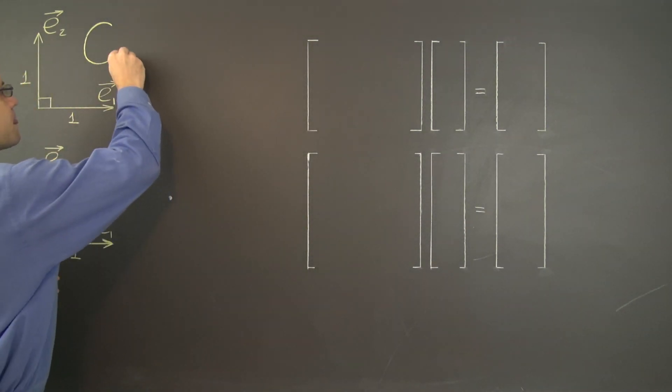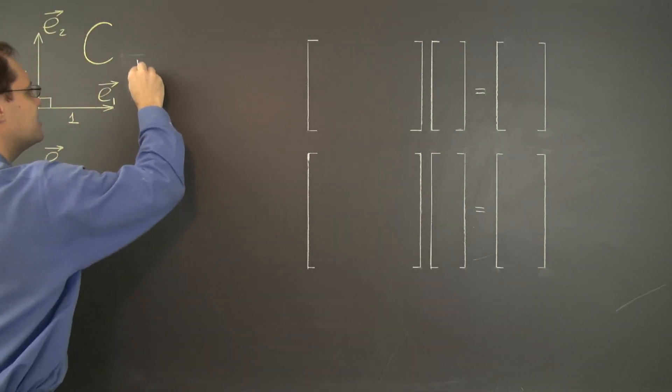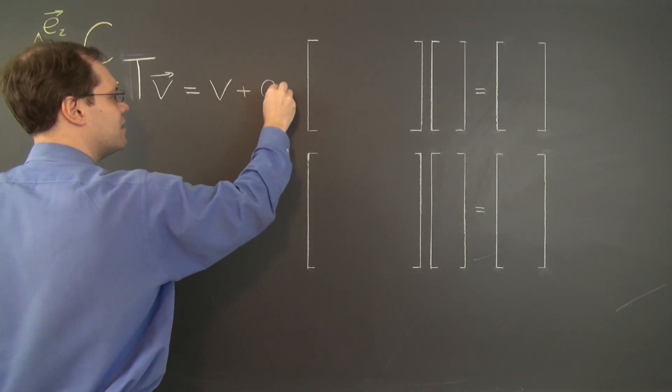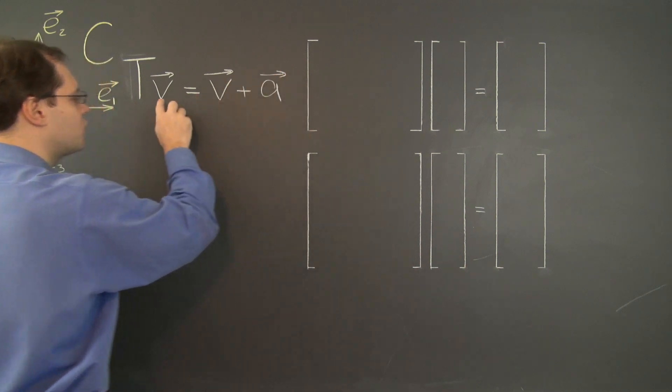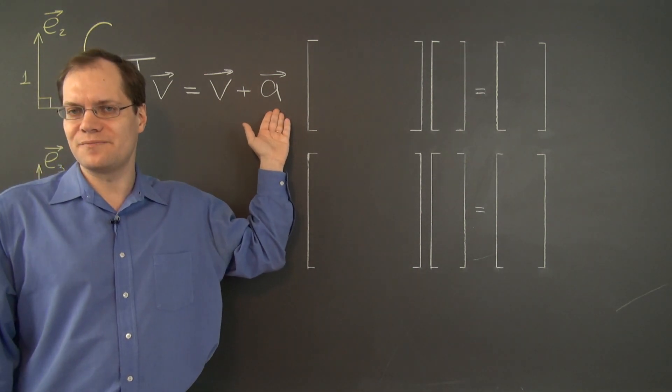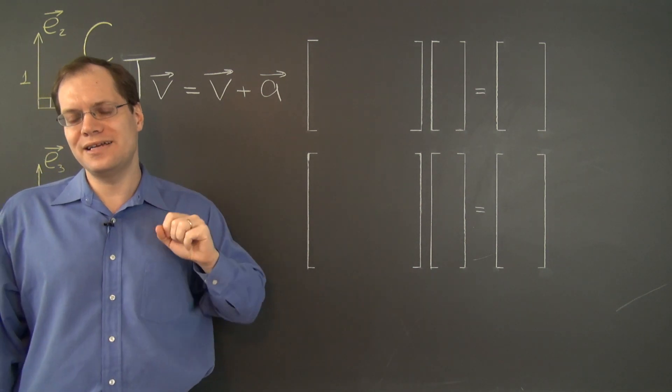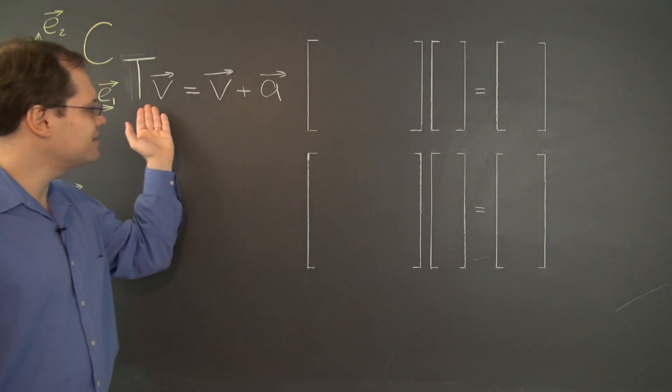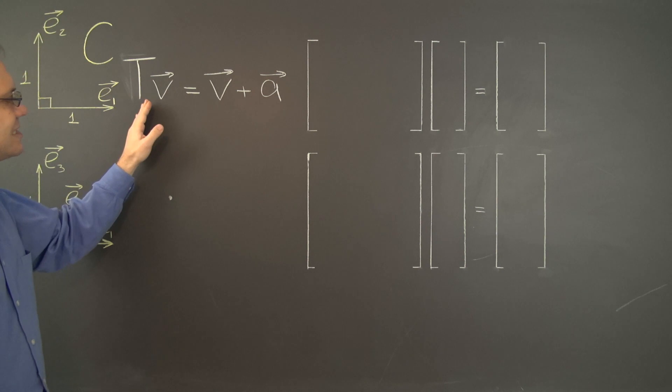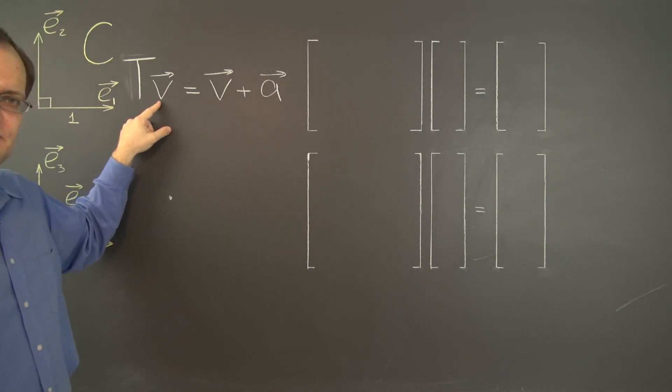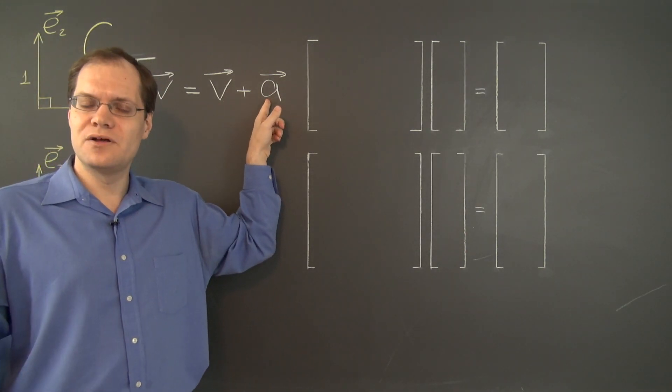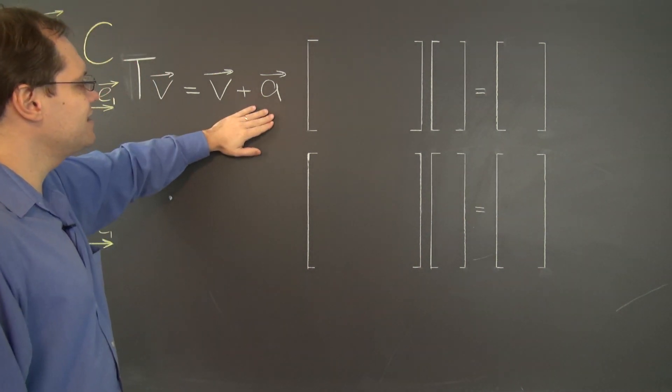Let's write down the algebraic definition of a translation. A translation applied to vector V is V plus A where A is the same vector for all the input vectors V. So it's really possibly the simplest transformation that one can think of. It's analogous to simple addition for ordinary numbers. And it just so happens that the simplest possible transformation is not linear. And you can see that it's not linear by testing that hallmark property. Apply this transformation to the zero vector and the result is the vector A, right, because it's zero plus A. So it's the vector A which is not zero. So this is not a linear transformation.